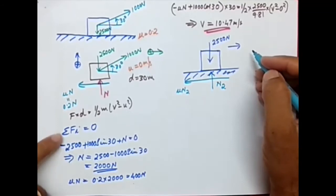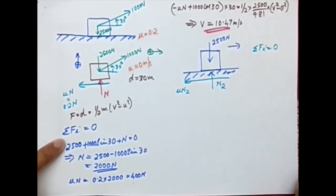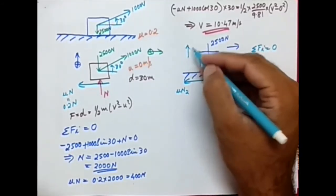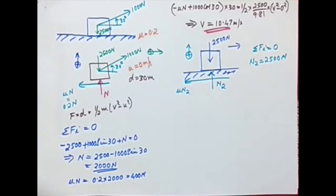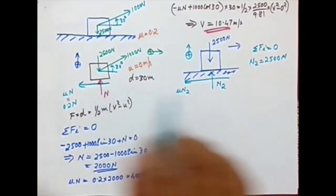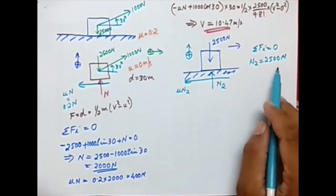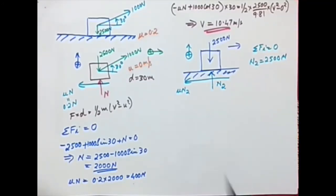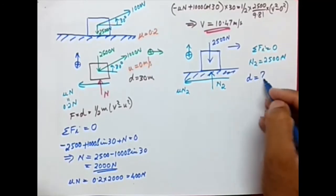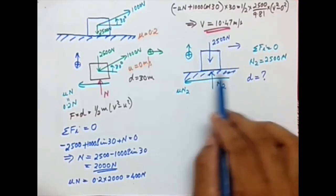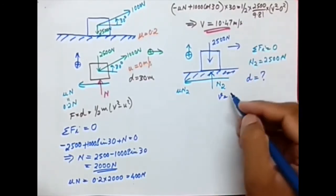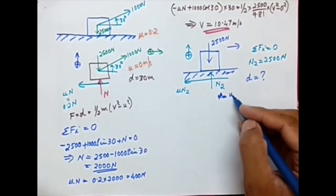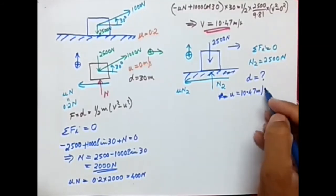Applying D'Alembert's principle in the vertical direction again — with zero vertical acceleration, sigma F_y equals zero. With no 1000 Newton force present, the new normal force N₂ equals 2500 Newton. So after 30 meters, the normal reaction has increased from 2000 Newton to 2500 Newton. The initial velocity for this phase is 10.47 meters per second, which is the velocity obtained at the end of the first part.